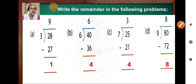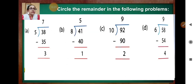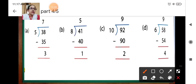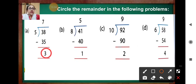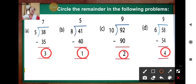Check the answers. Circle the remainder in the following problems. Thirty-eight divided by five — the remainder is three. Question B — remainder is one, circle it. Question C — remainder is two. Question D — remainder is four.